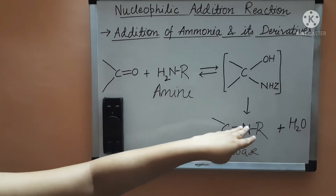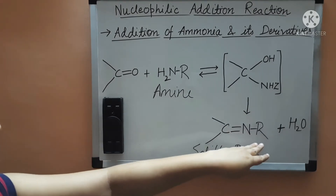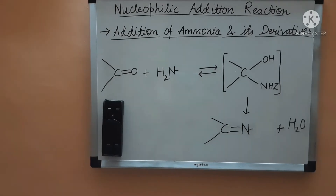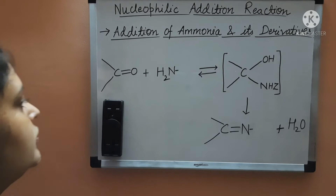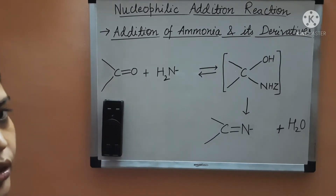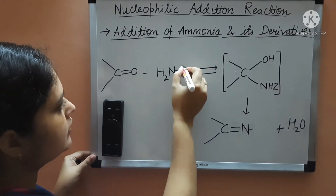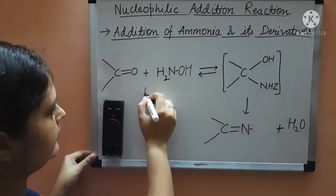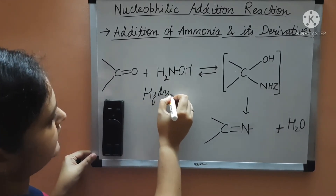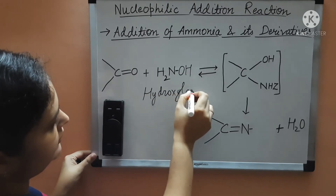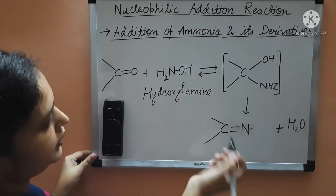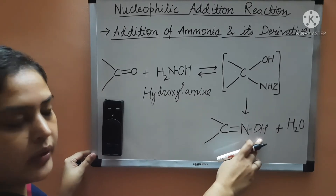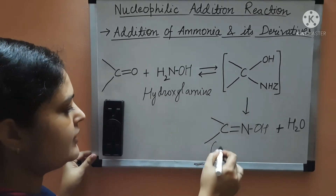If your Z group is OH, then this is known as hydroxylamine. And the product — where the Z group is also OH — will be called an oxime.